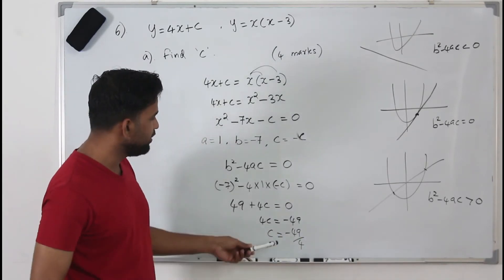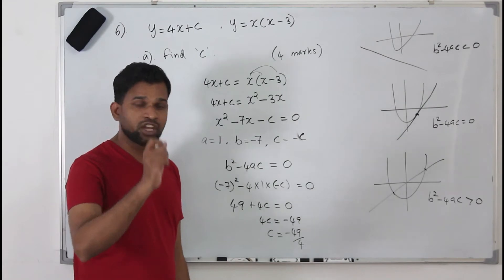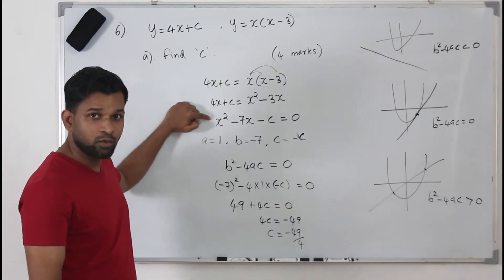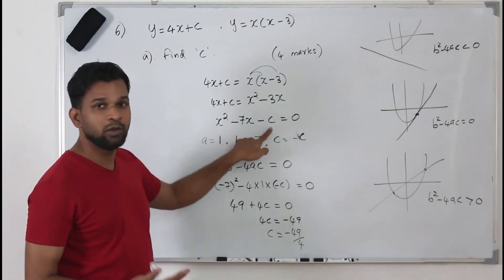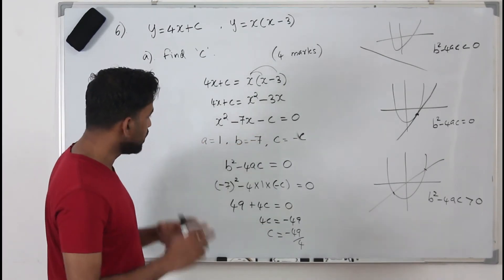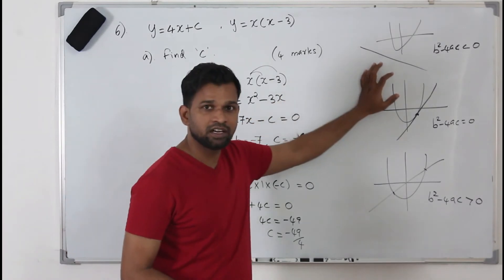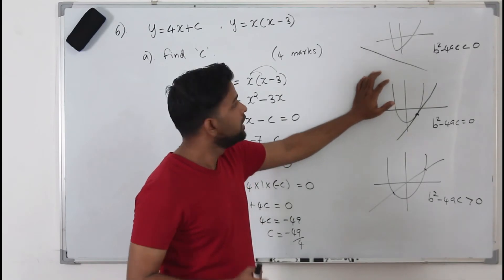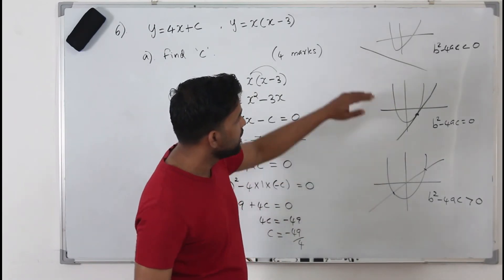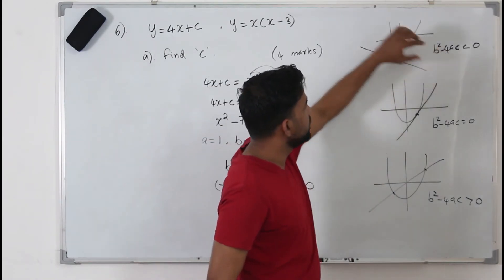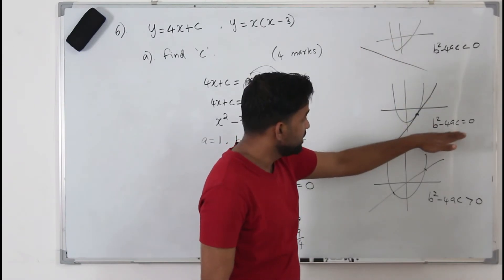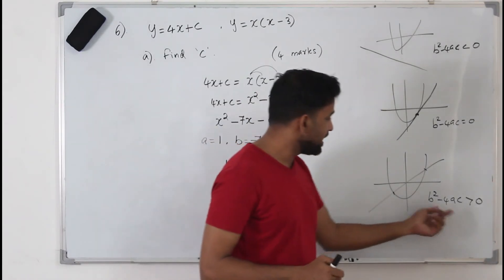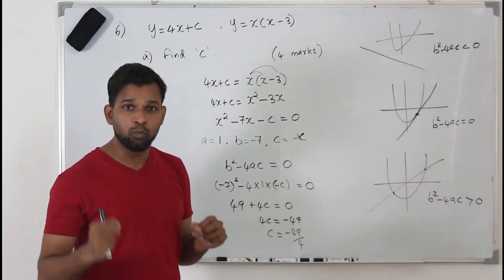This is how you find the value of c, earning all 4 marks. The tricky part is that trying to solve the quadratic equation directly is time consuming and won't give you c. You need to remember: if the discriminant is less than 0, the line never touches the curve; if it equals 0, the line touches the curve at exactly one point; if greater than 0, the line passes through the parabola at two points.